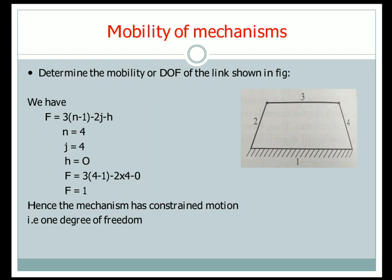Substituting n and j in Grubbler's criteria formula, we get f equals one. f equals one means the mechanism is under motion — it has one degree of freedom and can move in one direction. Hence the mechanism has constrained motion, that is one degree of freedom.